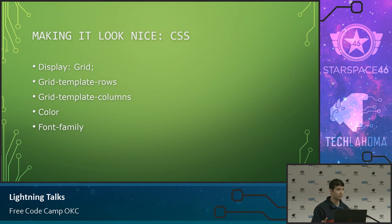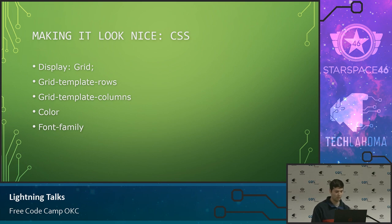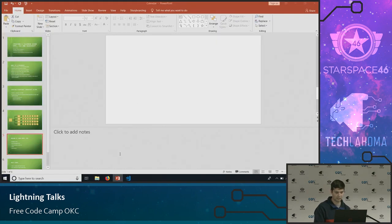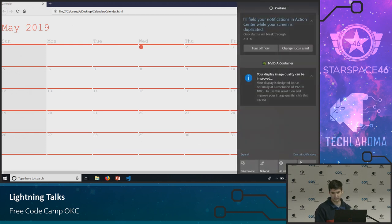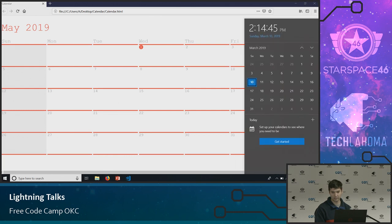Once you've created the structure, then you can use CSS. I use CSS Grid because the calendar is basically a grid. Then you can style it with color and font families to make it look nice. The finished product looks pretty nice — it kind of mimics what the Windows calendar looks like.